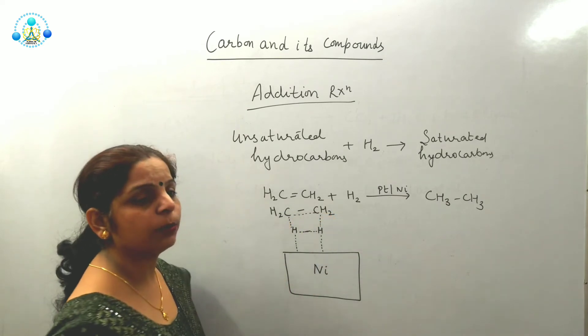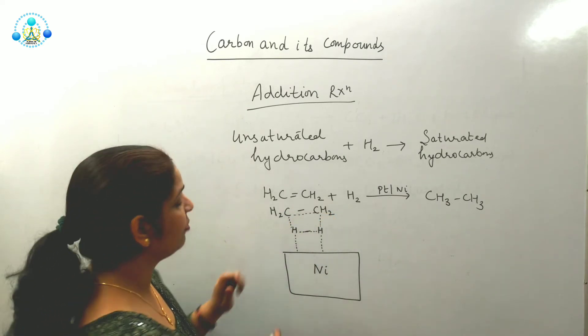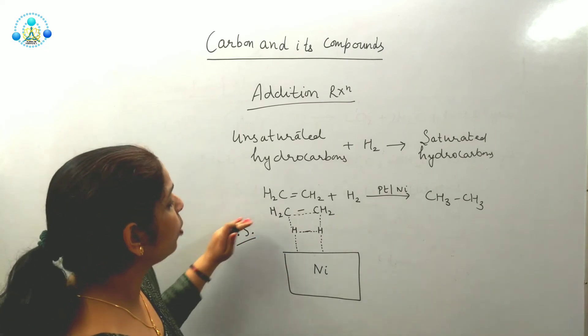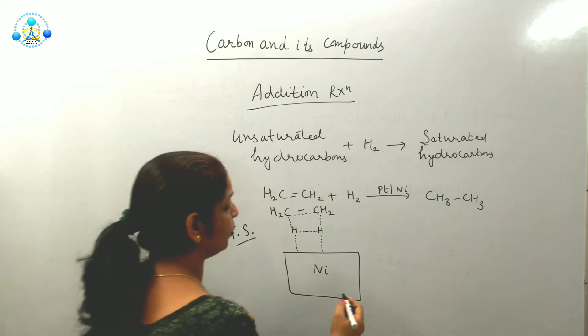This state where bonds are half broken and half formed is called transition state. This is state where bonds are half formed and half broken.